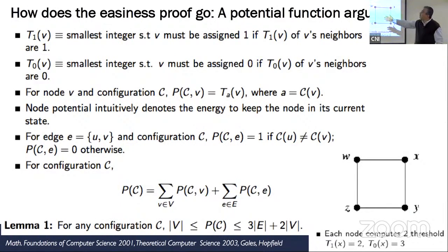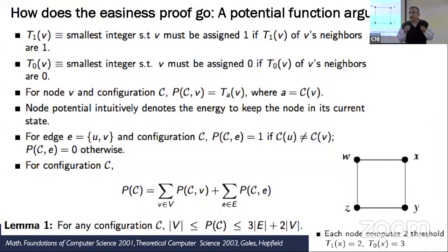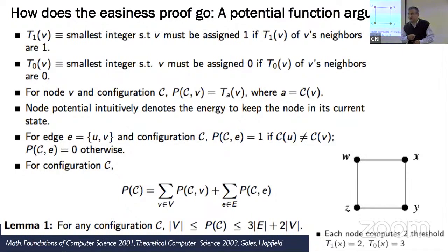When a node shifts state in one asynchronous step — only one node moves — the potential changes: moving from 0 to 1 loses energy by reducing the potential. This is reminiscent of energy arguments in physics. We are not the first to use potential arguments in this context — we came up with this particular potential function for use in sequential GDS analysis.